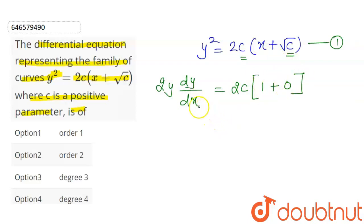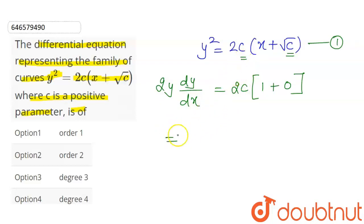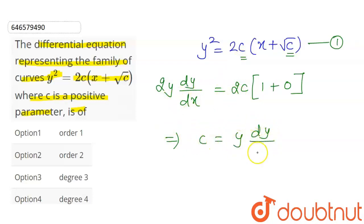Now, whenever we form a differential equation, after differentiation we need to eliminate the arbitrary constant. So from the differentiated equation, both sides the 2 cancels, giving us c = y(dy/dx).